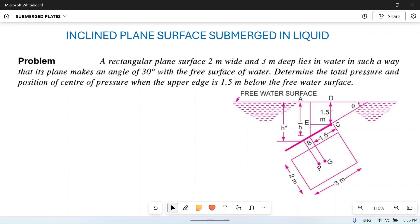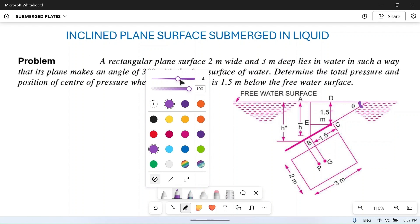A rectangular plane surface 2 meter wide and 3 meter deep lies in water in such a way that its plane makes an angle of 30 degrees with the free surface of water.